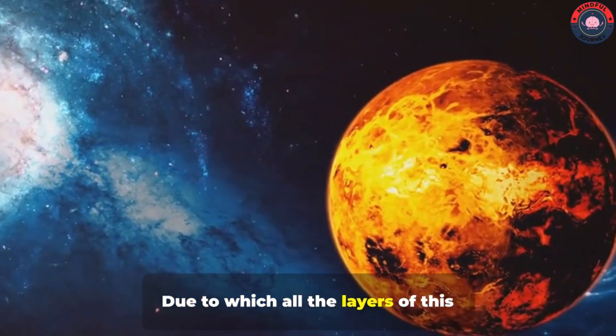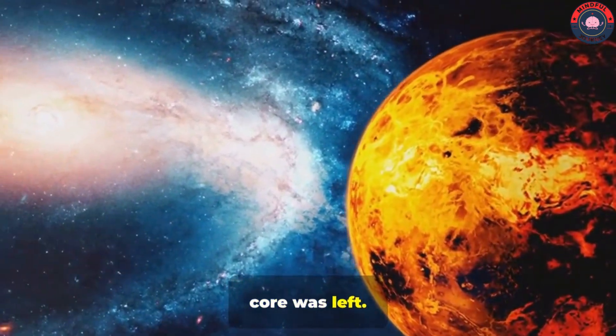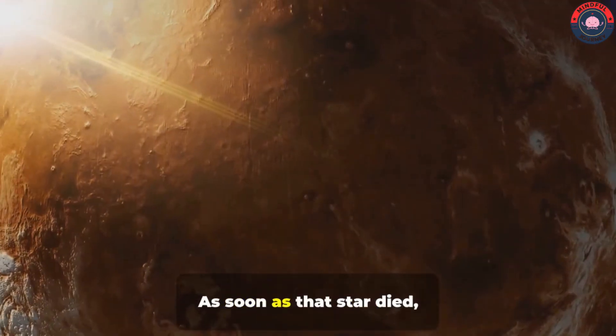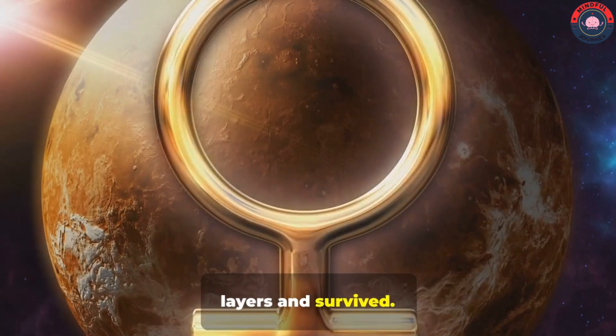Due to which all the layers of this planet were destroyed, and only an iron core was left. But then something magical happened in this case too. As soon as that star died, this planet came out of its radiation layers and survived.